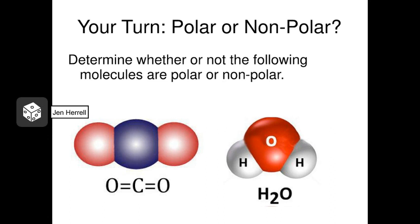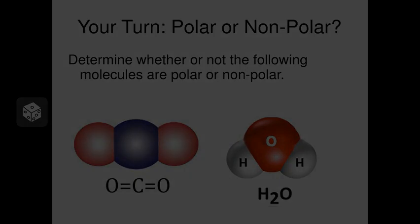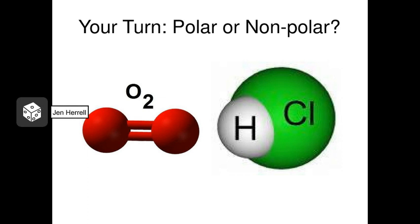Practice determining whether a molecule is polar or nonpolar using your guided notes. Look at each molecule and determine if it is polar or nonpolar based on its shape and the differences in electronegativity you see on the periodic table. On the left we have CO2, on the right we have water, and there are a couple more: oxygen gas O2, and HCl or hydrochloric acid. Determine whether these are polar or nonpolar, write it down, and bring it to class.